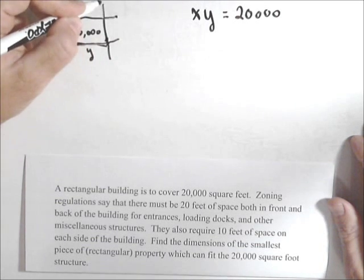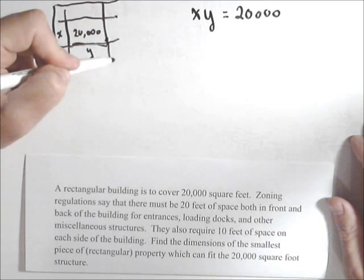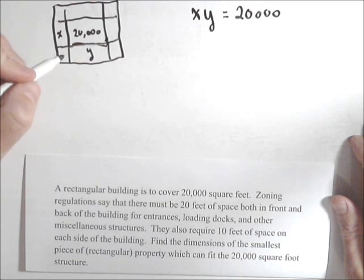So we get this larger piece of property here, and that's the one we have to find the dimensions of. So that's the one we're trying to minimize.